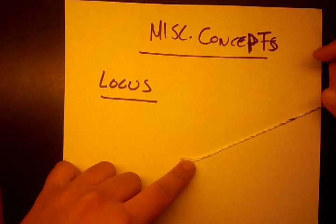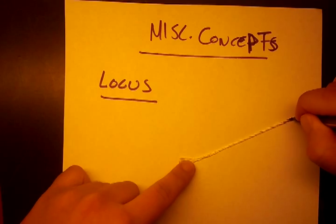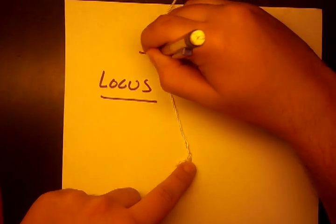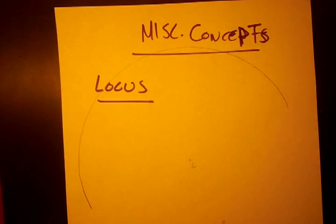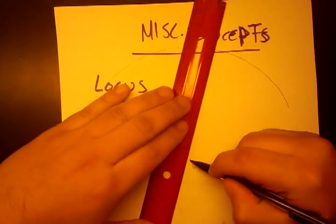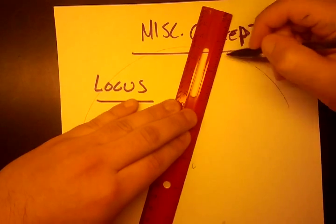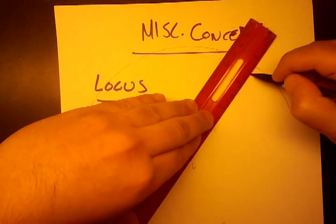It's defined by the blue marking right here. So if I pull my string tight and I start to draw my circle. Okay, I'll just draw that much of the circle. But as we can see, every point on the circle is a fixed distance away from the center point.